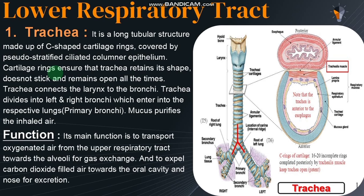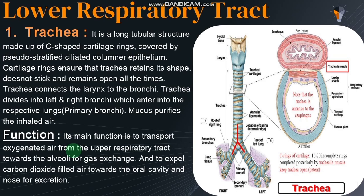The trachea connects the larynx to the bronchi. It divides into the right and left bronchi, which enter into the respective lungs as primary bronchi, further dividing into secondary and tertiary bronchi, then into bronchioles. Mucus glands keep the internal surface of the trachea moist, and mucus traps particles, thereby purifying the inhaled air. The function of the trachea is to transport oxygenated inhaled air towards the alveoli for gaseous exchange and to expel carbon dioxide-filled air towards the oral cavity.